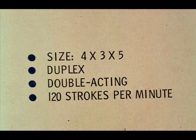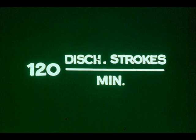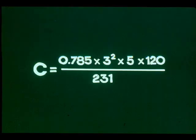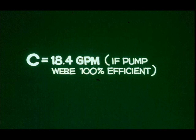Suppose the 4 by 3 by 5 pump we've been talking about is a duplex, double-acting pump making 120 strokes per minute. A duplex, double-acting pump discharges on each stroke, so this pump makes 120 discharge strokes per minute. Substituting numbers in the formula: C equals 0.785 times 3 squared times 5 times 120 over 231. C equals 18.4 gallons per minute.